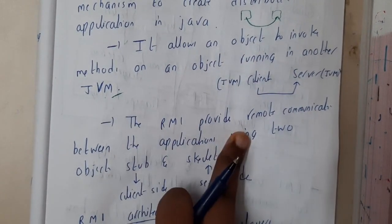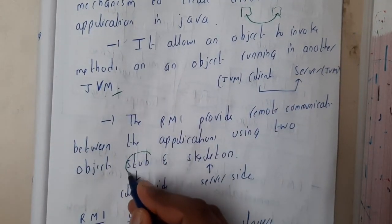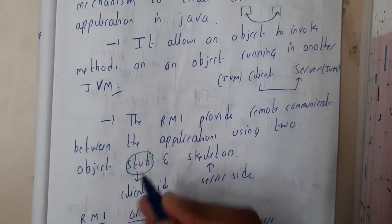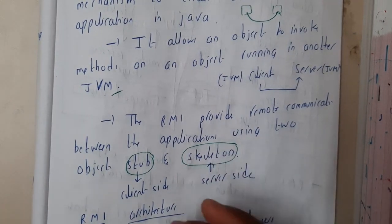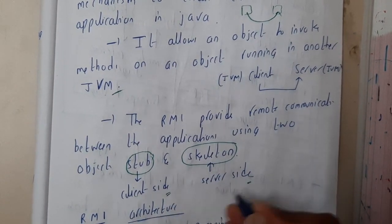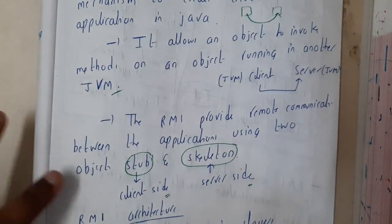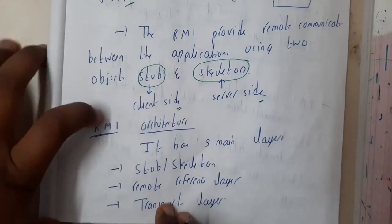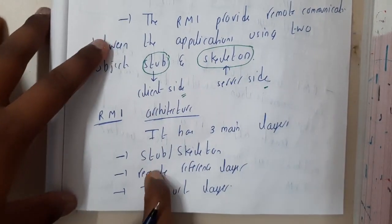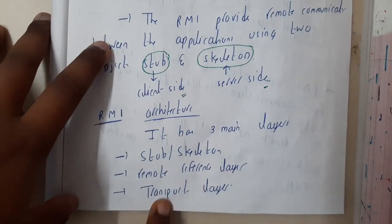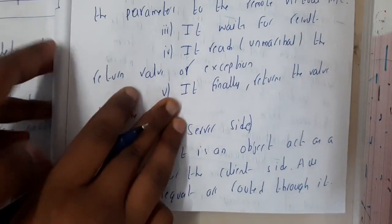RMI provides remote communication between applications using two objects. One is the stub and the other is the skeleton. The stub is the client side and the skeleton is the server side — these are the things which do the main work. Now let us go through the RMI architecture. It has three different layers: the stub/skeleton layer, the remote reference layer, and the transport layer.